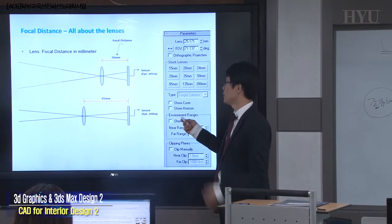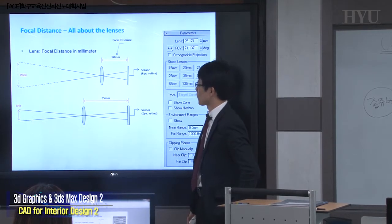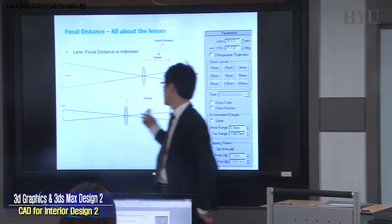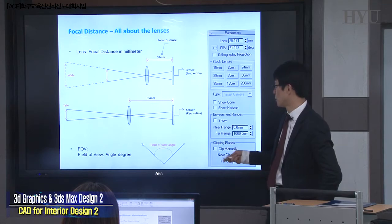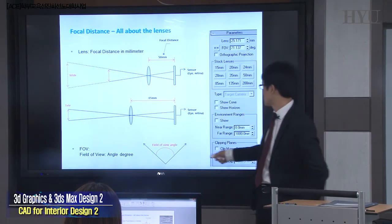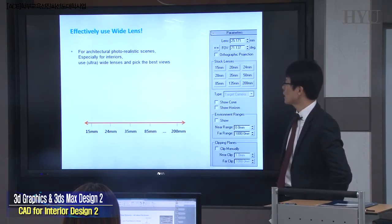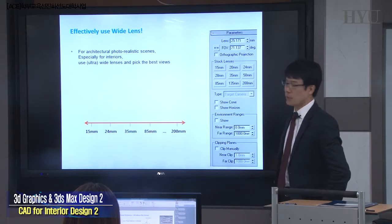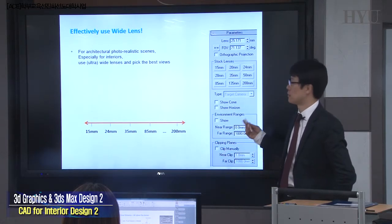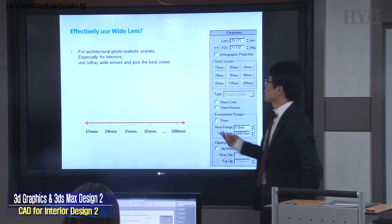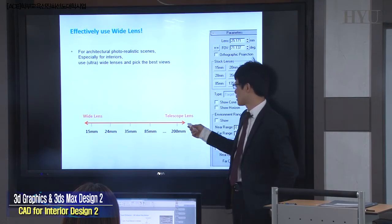Get back to the lecture slide. Now we take a look at focal distance. This is a wide lens; this is a telescope lens. So we have field of view — FOV, angle of degree. FOV angle is a different approach, but eventually they are some kind of same concept. So architecturally, especially for interior architecture, we need wide lenses rather than telescope lenses.